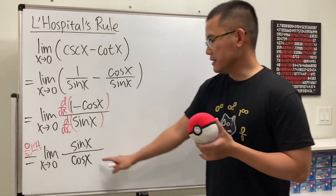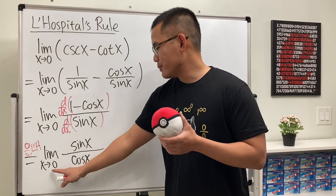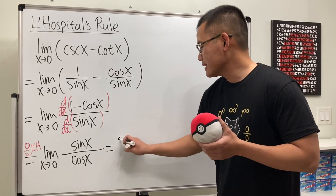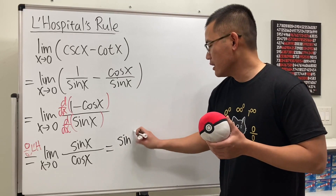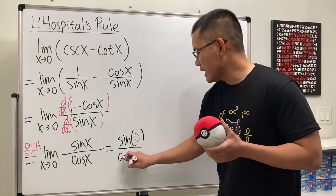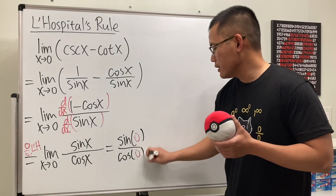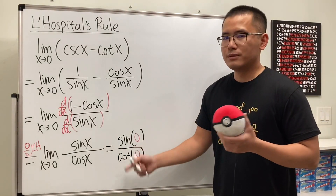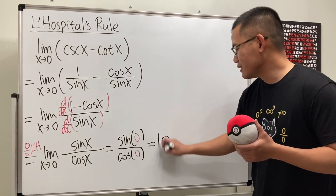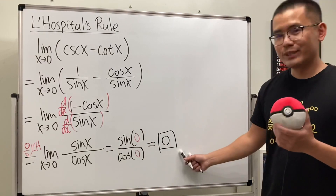That gives us sine x over cosine x, which is just tangent. We can just put 0 in here and we get sine of 0 over cosine of 0, which is tangent 0, giving us 0 over 1. So the answer is equal to 0.